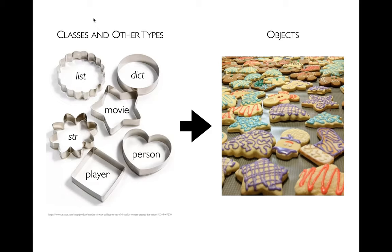Maybe I have list objects — there's only one list type. But from that list type in Python, I can create lots of different list objects. I can punch out a lot of different cookie objects from that one frame type. There are a lot of types built into Python: we have lists, dictionaries, strings. What we want to do now is learn how we can make new types for very specific use cases.